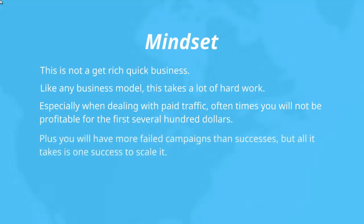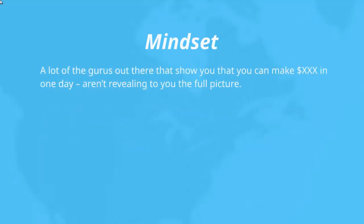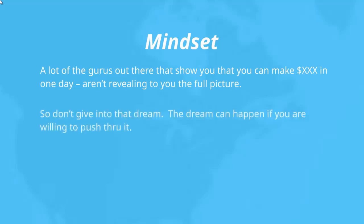The reality is that you're going to have more failed campaigns than successes. But all it takes is that one success to scale it. You might test 10 or 20 different campaigns and out of those you might find one or two which you can then hone in on and begin to scale. A lot of gurus just show you the success part without revealing the full picture. I want you to understand the full truth and reality, and that you're willing to push through it.